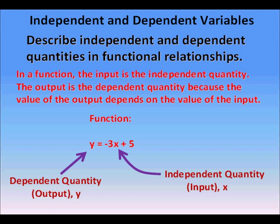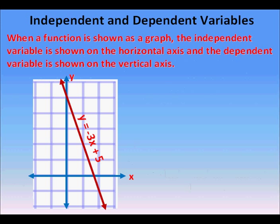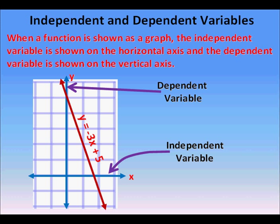When a function is shown as a graph, the independent variable or quantity is shown on the horizontal axis and the dependent variable or quantity is shown on the vertical axis.